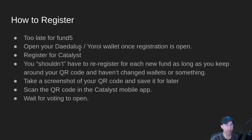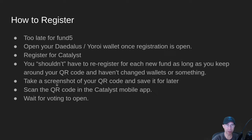So how do you register? Well, first of all, it's too late for Fund 5. Keep an eye out for when Fund 6 registration opens. Essentially, you go into your Daedalus or your ROI wallet. Once registration is open, you go through the registration process for Catalyst, and the output of that is going to be a QR code. You scan that QR code into the Catalyst mobile app — there are iOS and Android versions of that — and then the voting actually happens on the app. What I would do is make sure to take a screenshot or somehow save your QR code for later. As they've gotten further with this process, you don't have to re-register for every fund as long as you have your QR code. You just re-scan the QR code in the new fund in the new app. For this particular fund, I'm reusing my QR code from Fund 4, and it still has all my same voting power and everything.